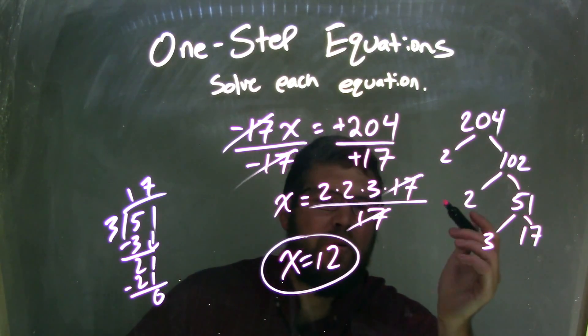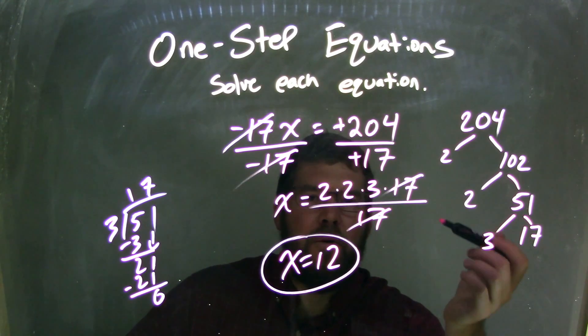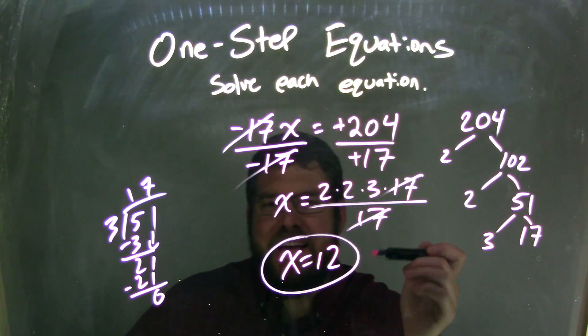But 17 into 204 shouldn't be too hard of a long division problem. So anyway, our final answer here is x equals 12.